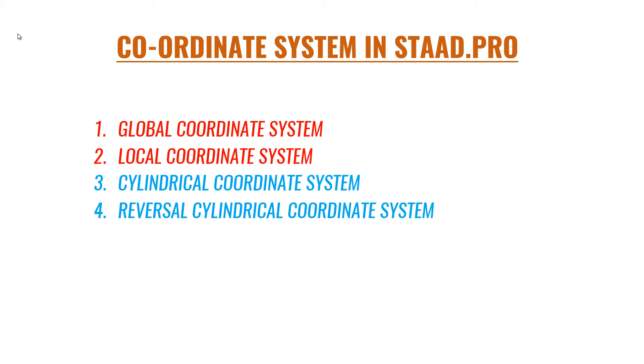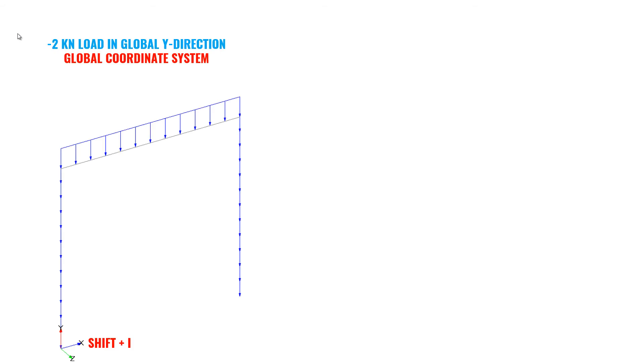Let's see what is global and local coordinate system. To understand the difference between these two systems, I have come up with an example. Look at this 2D frame. Here there are two columns and one beam. When you work with global coordinate system, these three members will be considered under global coordinate system.